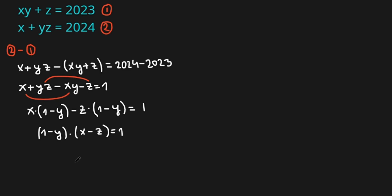Now because x, y, and z are integer numbers, this means that (1 minus y) and (x minus z) are also integer numbers. So I have to find the integer factor pairs of 1: it can be written as 1 times 1, or as minus 1 times minus 1.